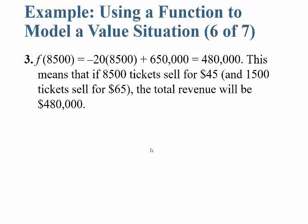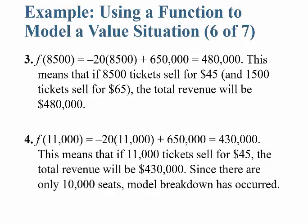F(8,500): plugging in, −20(8,500) + 650,000 = $480,000. This means that if 8,500 tickets sell for $45 and the remaining 1,500 sell for $65, the total revenue would be $480,000. For F(11,000): −20(11,000) + 650,000 = $430,000. This means if 11,000 tickets sold for $45, total revenue would be $430,000 — but since there are only 10,000 seats, this is model breakdown; you can't sell more tickets than there are seats.